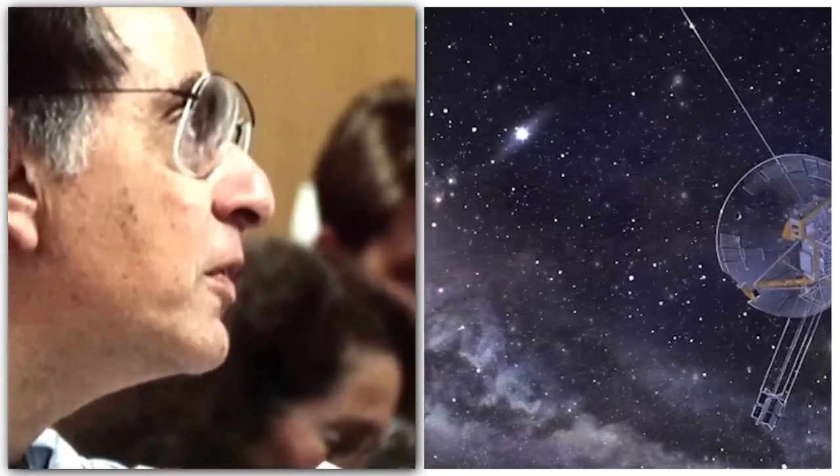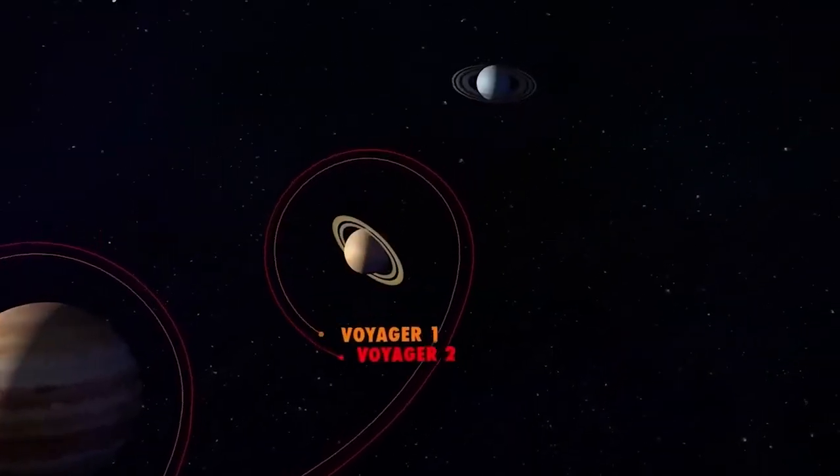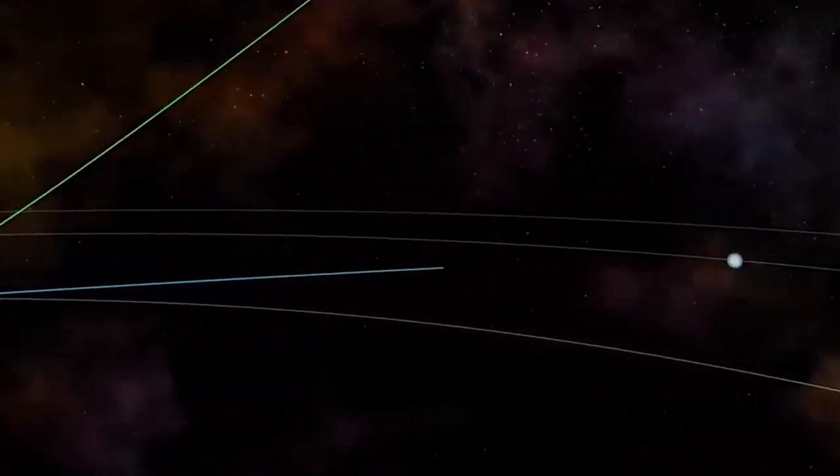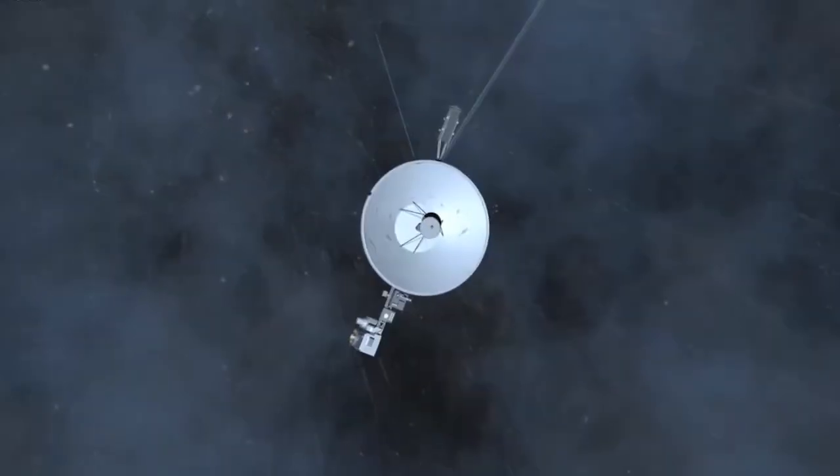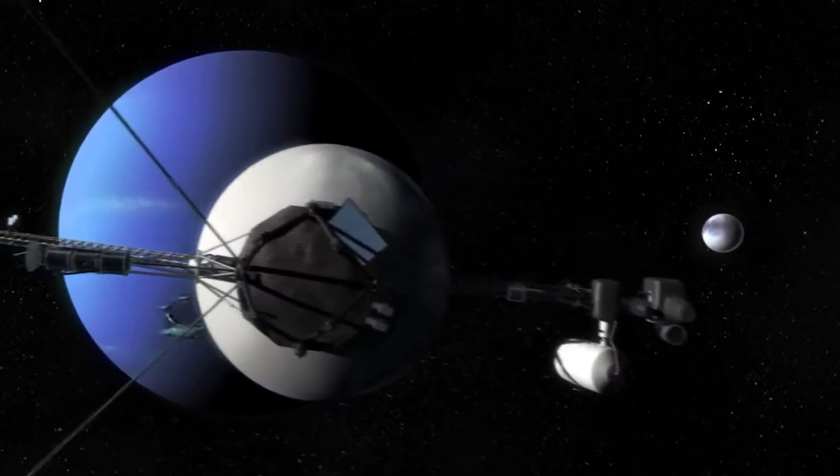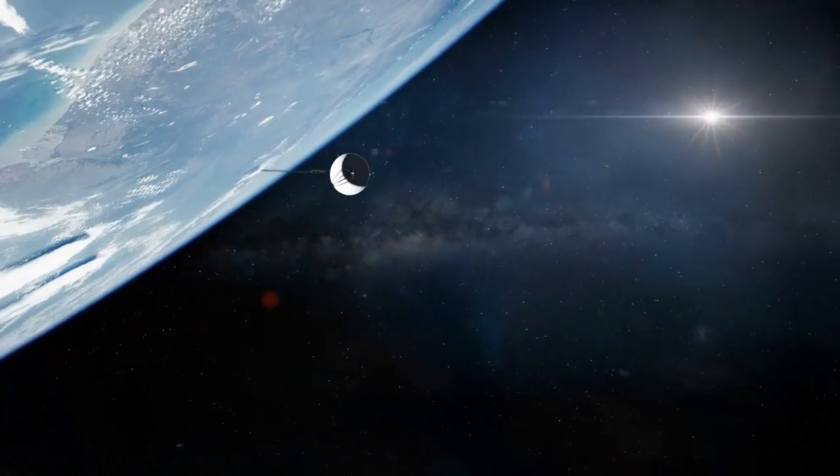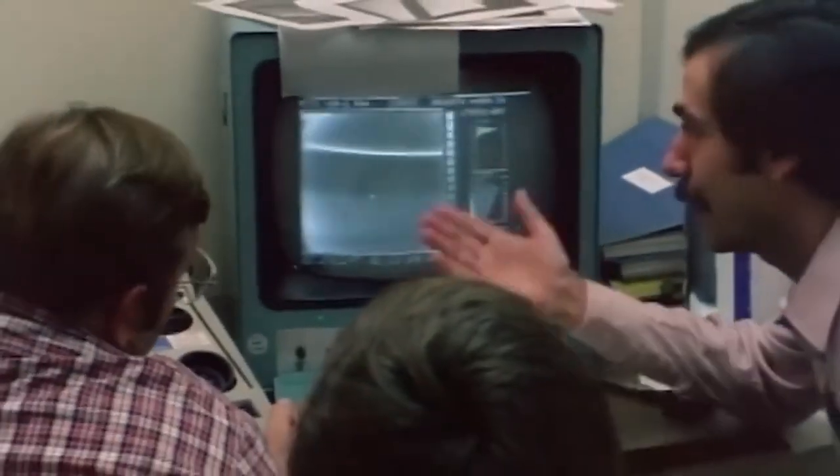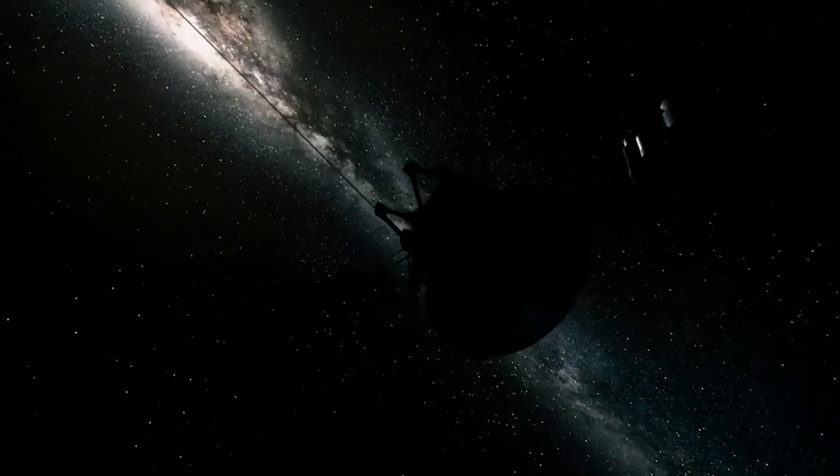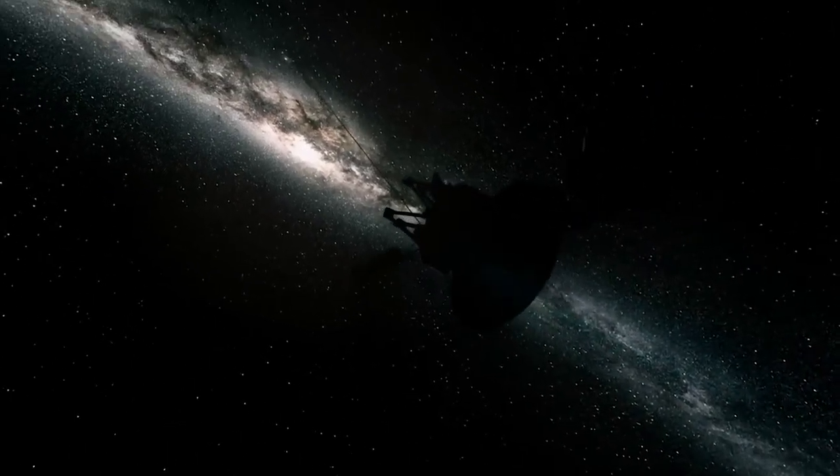The further Voyager 1 gets from Earth, the more likely it is that unusual things will start happening to the spaceship. Now, there is a problem with the spacecraft's AACS. This gear not only regulates the probe's orientation in space, but also points the high-gain antenna that interacts with Earth. Engineers have confirmed that the AACS's operating is expected. According to NASA, the data it is sending back is inadequate for explaining the system's behavior. The information may appear to be arbitrarily constructed or does not reflect any probable state the AACS could be in, NASA warned.